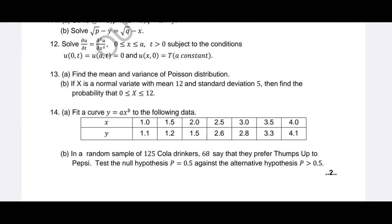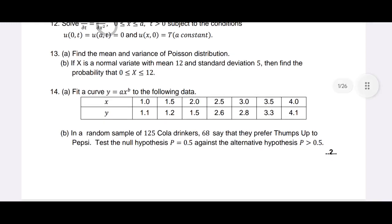We have four types of standard curves to fit: fitting a straight line, fitting a parabola, fitting an exponential curve, and fitting a power curve. Question 14b is on testing of hypothesis — large sample: 125 cool rings and 68 — sample size 125 is greater than 30, so it is a large sample single proportion problem.